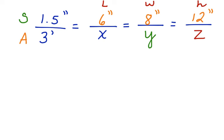Now, first, let's solve for the length. So we're going to use a proportion. 1.5 over 3 is equal to 6 over X.